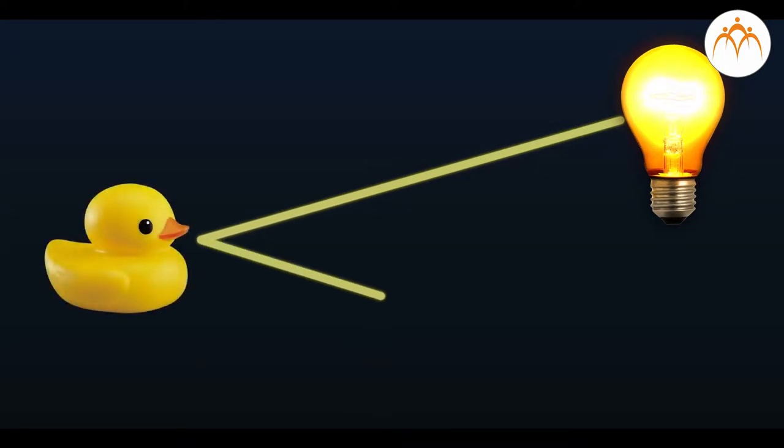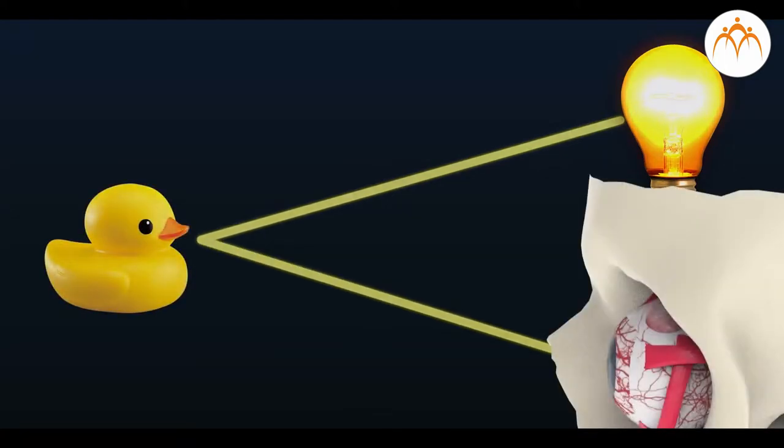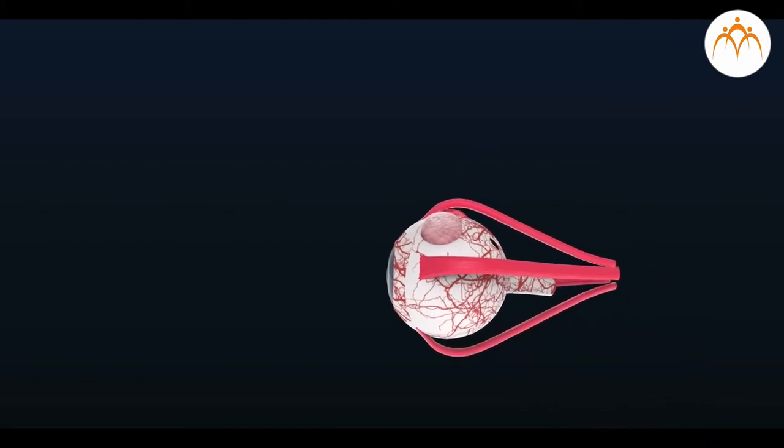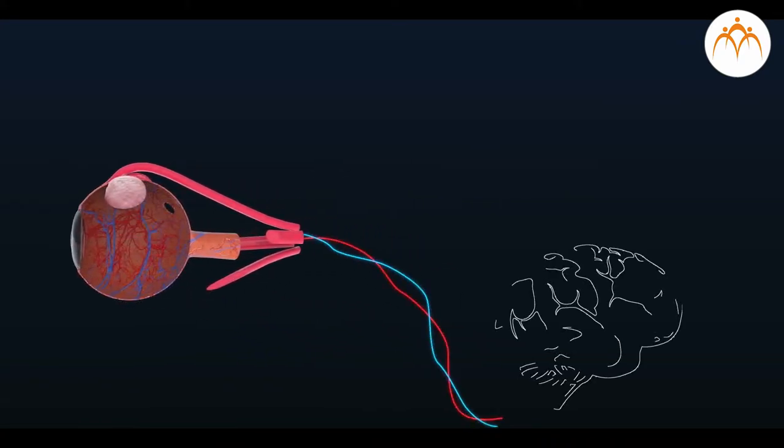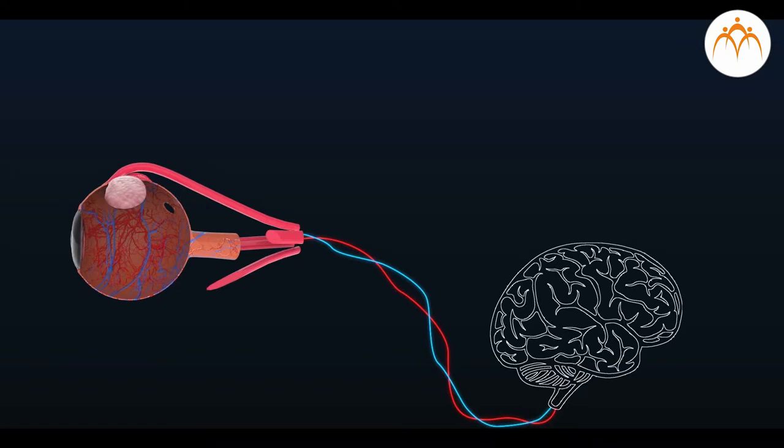Without light there would be no sight. We see objects as a result of the complex interaction of light, our eyes and brain. Once light reaches our eyes, signals are sent to our brain and our brain analyzes the information.